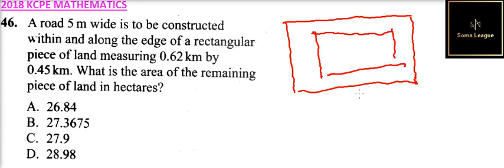We are given the dimensions in terms of kilometers. So if you multiply by a thousand, you get this is 620 meters. The width is 0.45, that is 450 meters.